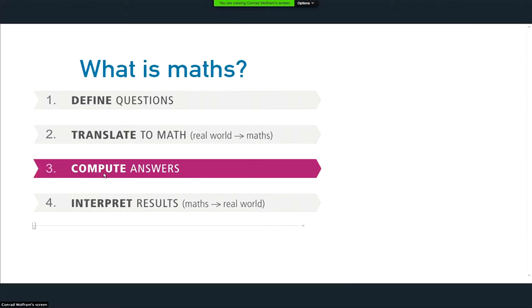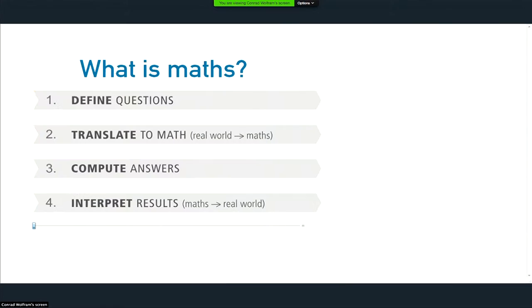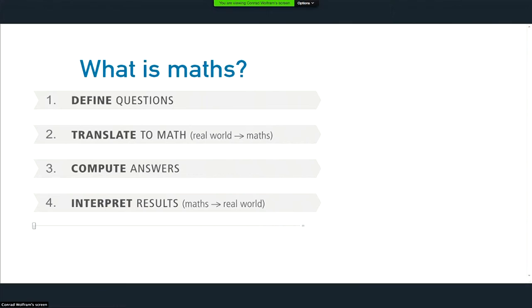And then you're interpreting the results and taking back the answer from its abstract form to the real world. And the big problem in math education in schools around the world is we're spending almost all our time teaching people how to do step three by hand. And what that does is drown out most of these other steps and it also means the problems are much more simple than they should be.